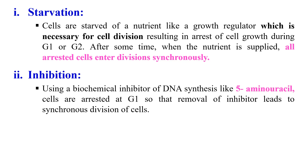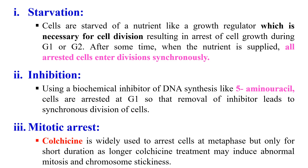In the inhibition method, biochemical inhibitors such as 5-aminouracil are used. 5-aminouracil arrests cells at the G1 phase. Once the inhibitor is removed, all cells move from G1 to the next stage synchronously. In mitotic arrest, chemicals like colchicine are used to arrest cells at the metaphase stage. Once colchicine is removed, all cells move to the next phase from metaphase. However, colchicine should only be used for short durations, as prolonged use may introduce abnormal chromosomal mutations.